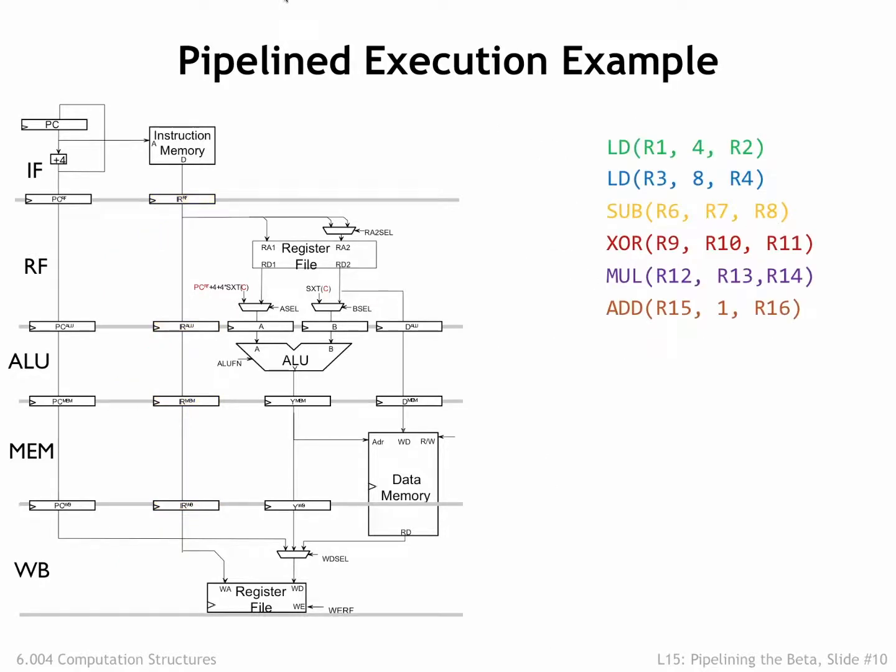Our simplified diagram isn't so simple anymore! To see how the pipeline works, let's follow along as it executes this sequence of 6 instructions. Note that the instructions are reading and writing from different registers, so there are no potential data hazards. And there are no branches and jumps, so there are no potential control hazards. Since there are no potential hazards, the instruction executions can be overlapped, and their overlapped execution in the pipeline will work correctly.